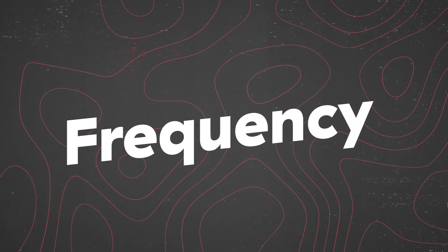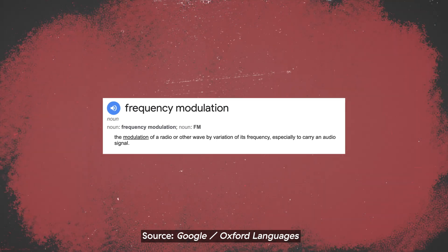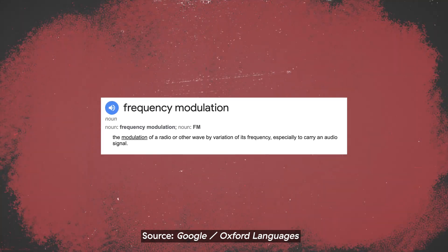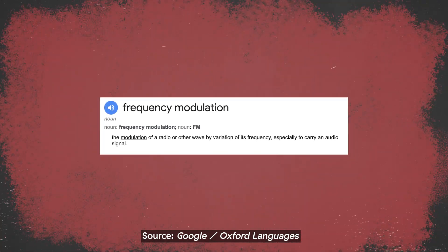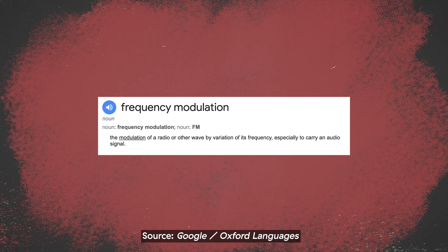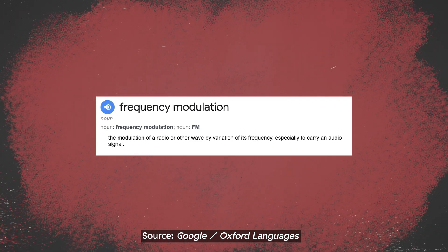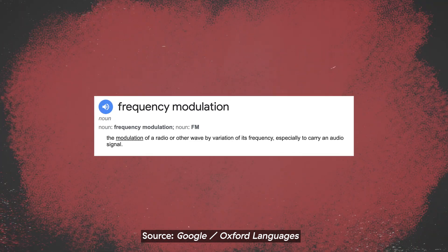Frequency. Lots of Latin today, gang. The Latin word 'frequens' — with an S — means 'often'. Frequency represents a number of cycles per second per wave. Thus, it reflects how often a signal repeats in a certain given time.